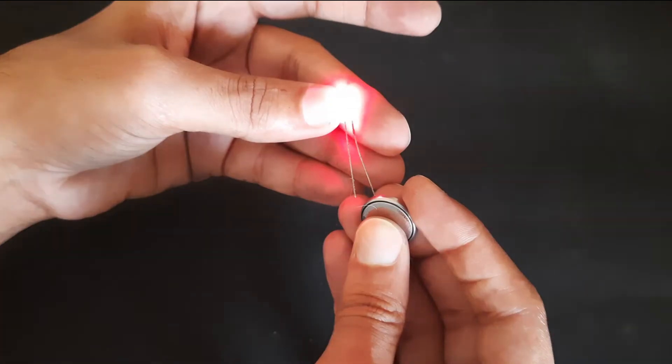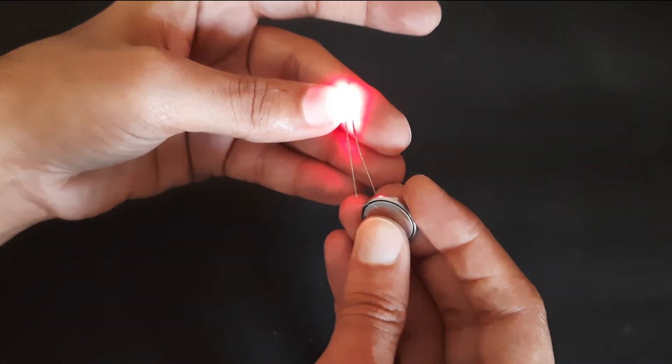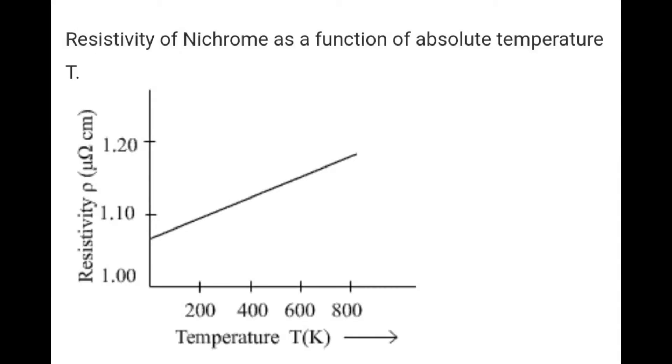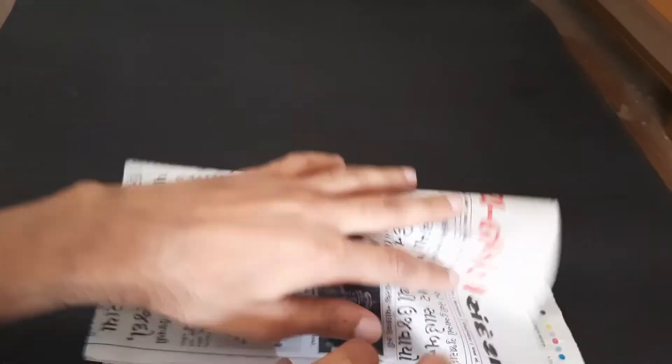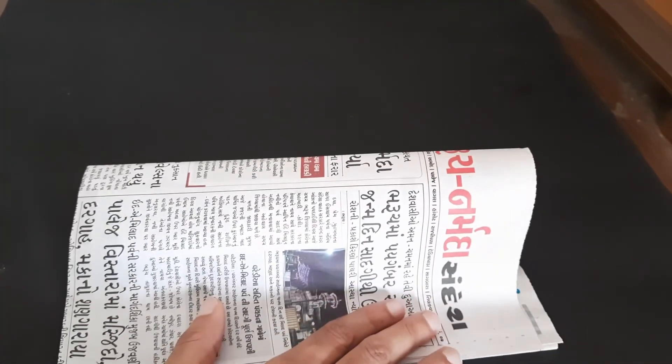And now I will show you the conductivity of tungsten used in light bulbs, which gets red hot.